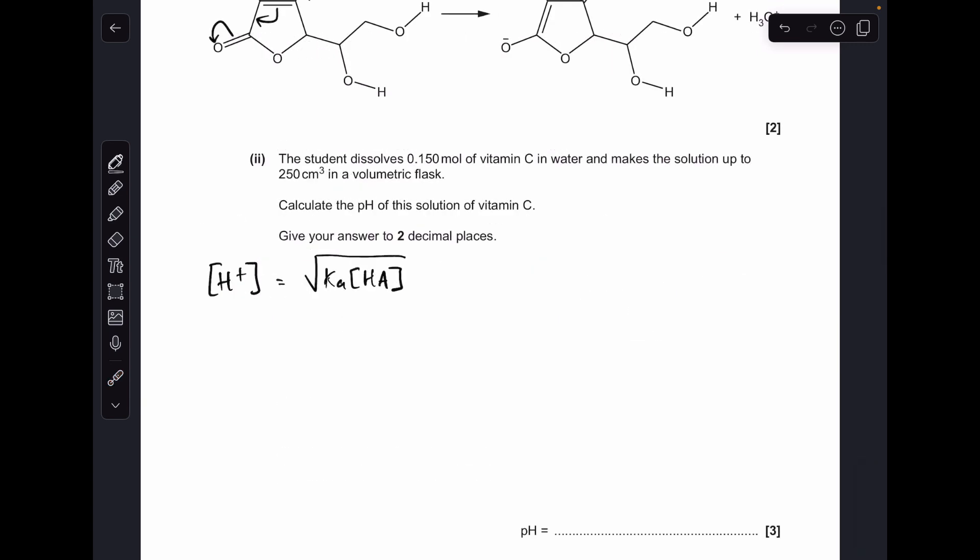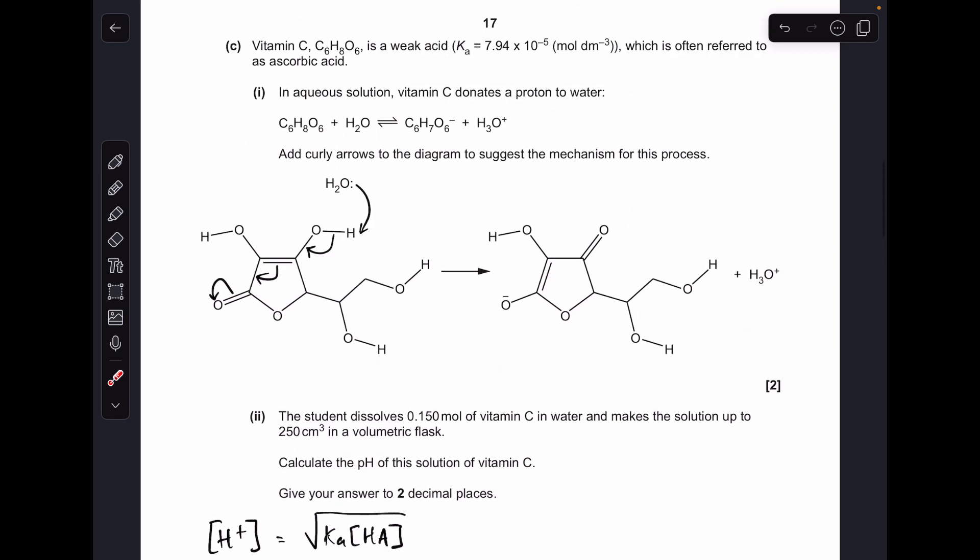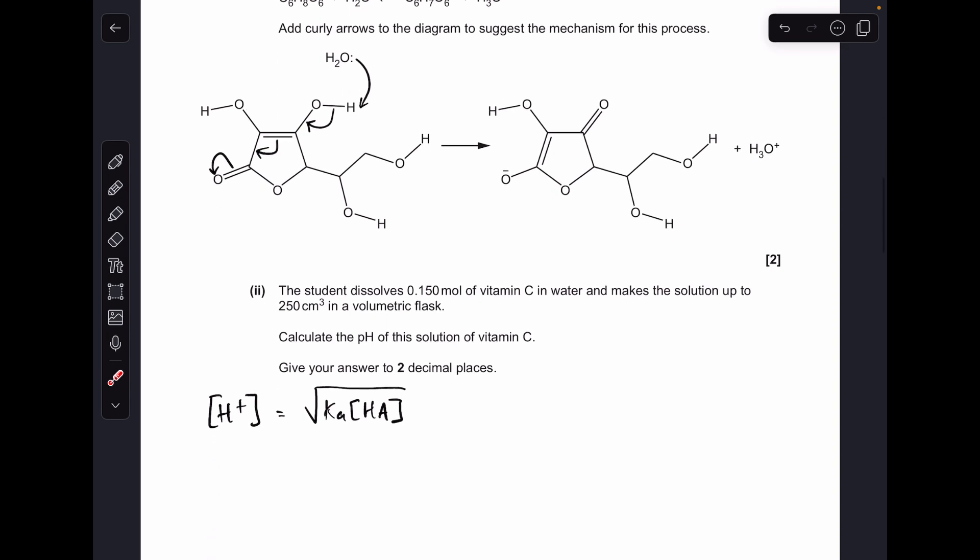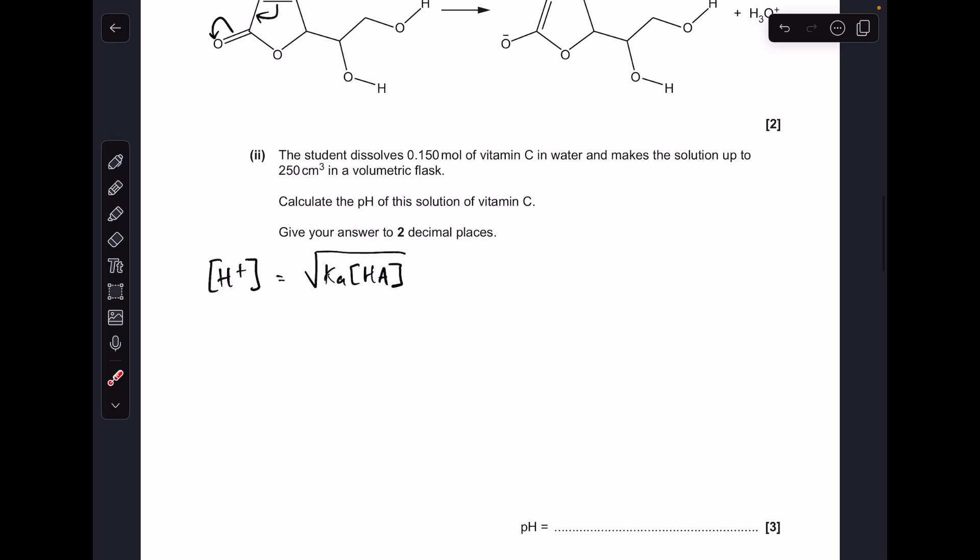Moving on to the calculation: vitamin C is a weak monobasic acid. You can see it's partially dissociating and generating one H+ ion in the form of an H3O+ ion. To calculate the H+ concentration of a weak monobasic acid, it's the square root of Ka, the acid dissociation constant, multiplied by the concentration of the acid. We know the Ka value was given at the top of the question.